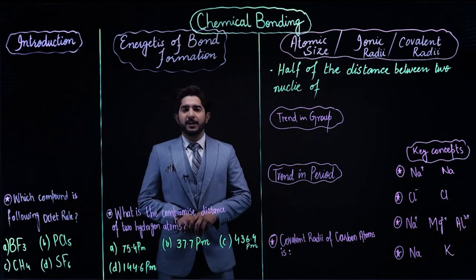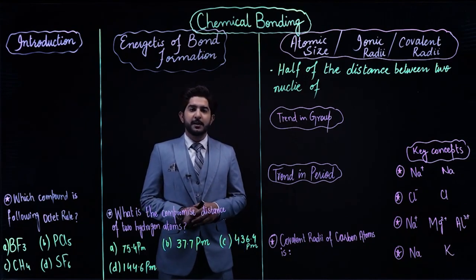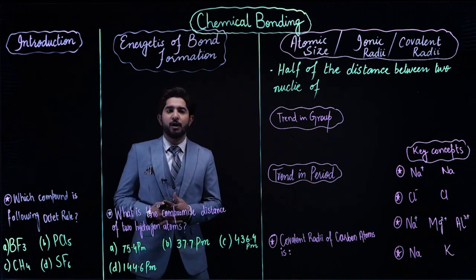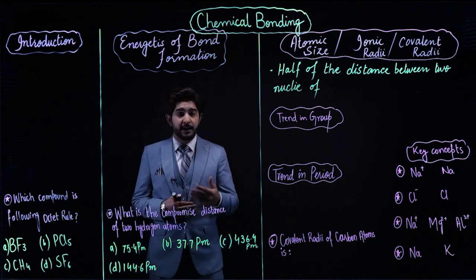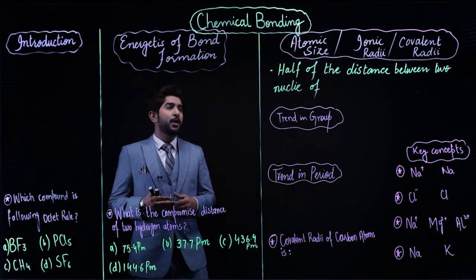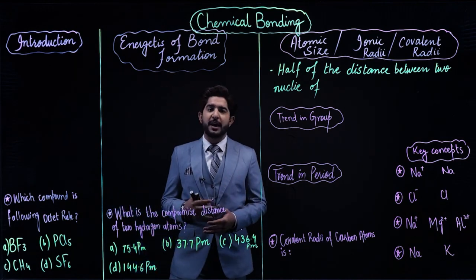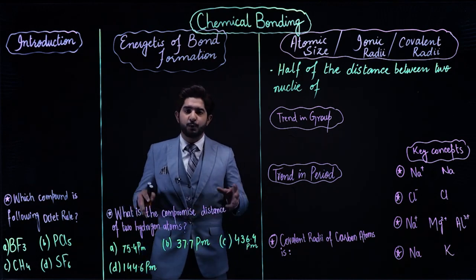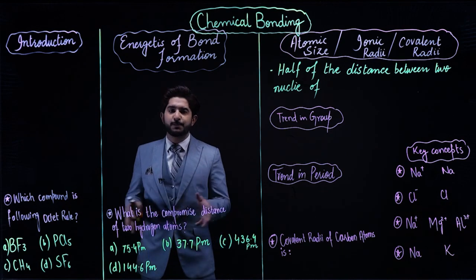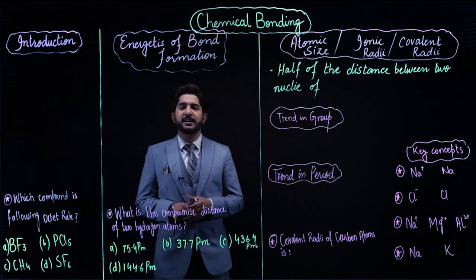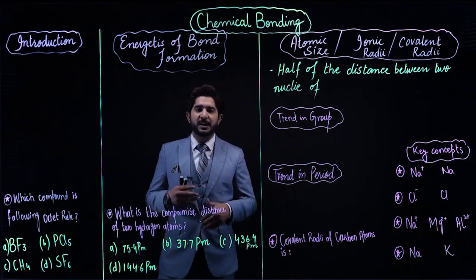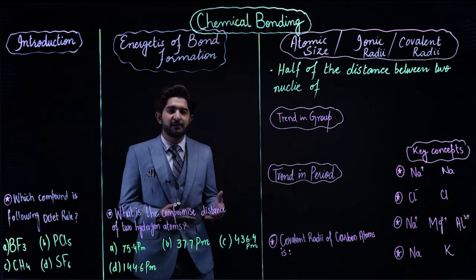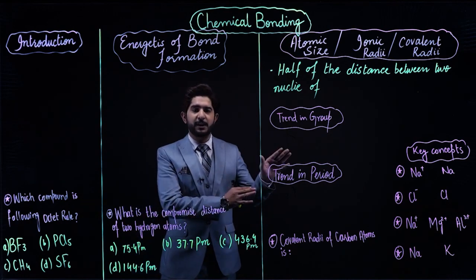This is our new topic: chemical bonding. We are going to cover the energetics of bond formation — the energy change when a bond is made — and what is ionic radius, what is covalent radius. Along with these, we will also cover the types of chemical bonding: ionic bonding, covalent bonding, coordinate covalent bonding, also known as dative bonding. After that, we will move on to their explanations.